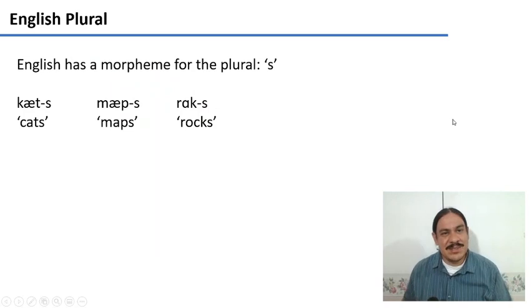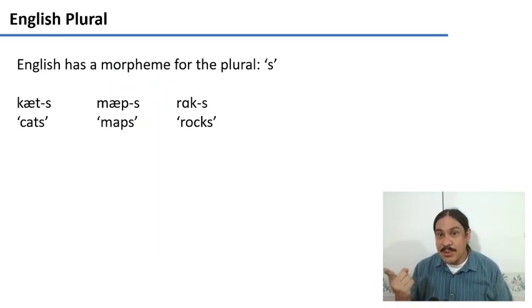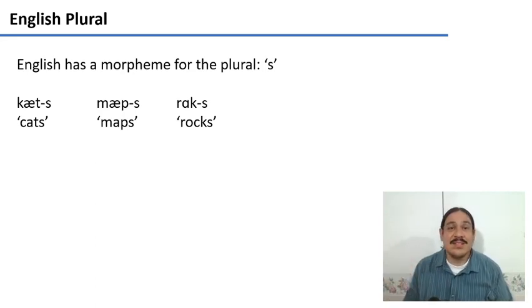Let's jump right into it. English has a morpheme for the plural, a bound inflectional morpheme, and it is written with the letter S, as in cats, maps, and rocks.